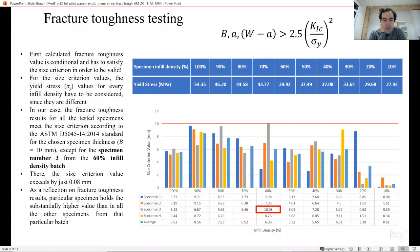It crossed the size criterion value by 0.08 mm. But because we used one specimen more than needed, still the results from this batch are correct. We just dismissed the results from specimen 3. As a reflection on fracture toughness results, this particular specimen holds higher value than all other three specimens from this particular batch.